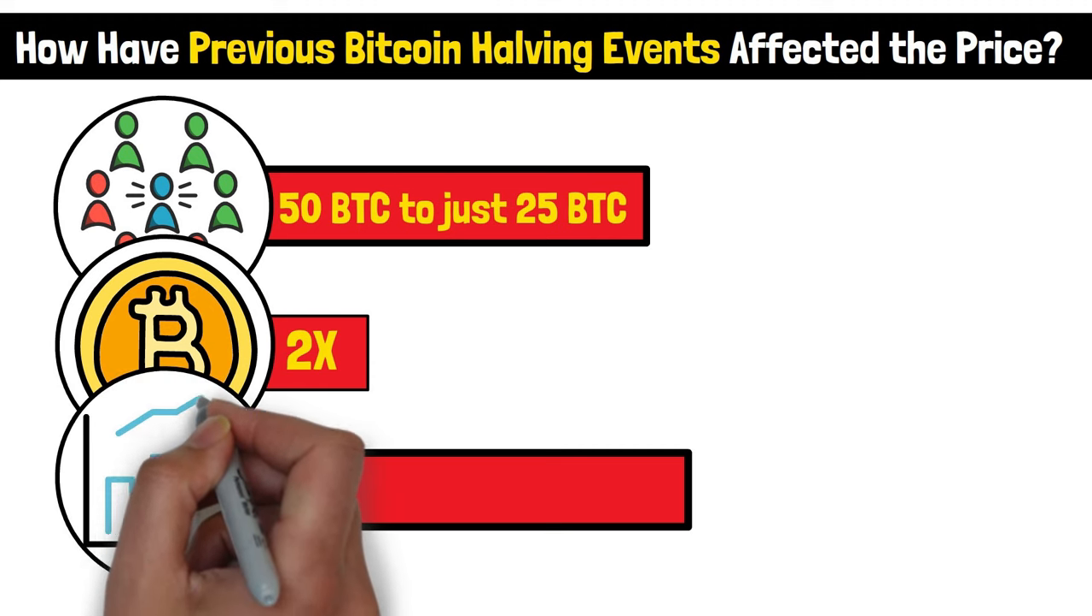Then came a jaw-dropping surge in price. From just $12, Bitcoin's price rocketed to over $1,000 within just a year. That's more than an 80-fold increase. This was the first real proof that halving was a game-changer.